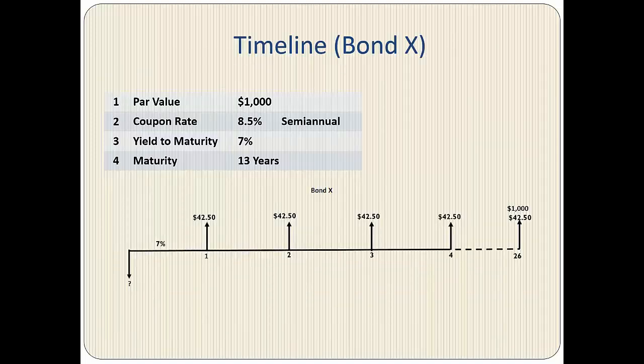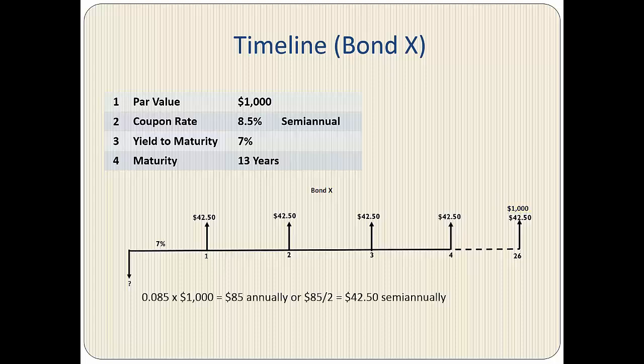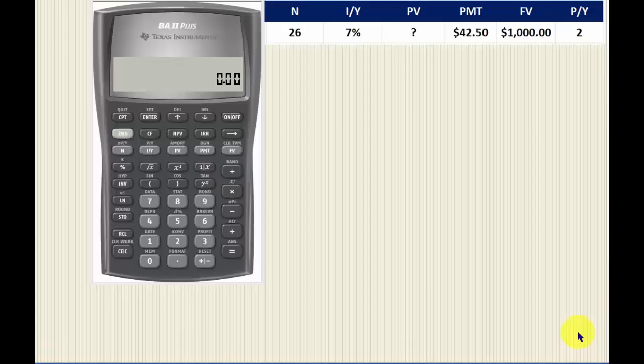Here is the timeline for Bond X. The par value is one thousand dollars. The coupon payment is 8.5% of the par value, or $42.50 semi-annually. To find the current price, we are going to discount the cash flows by 7%, which is the yield to maturity of this bond. Bond X matures in 13 years or 26 semi-annual periods.